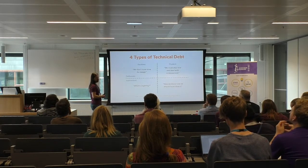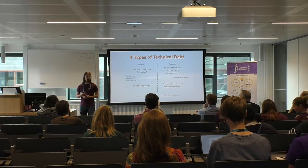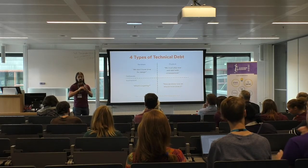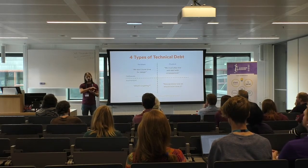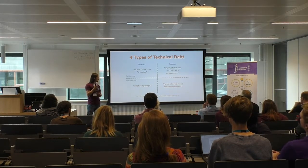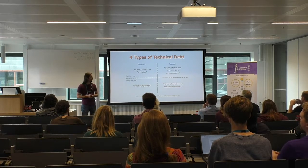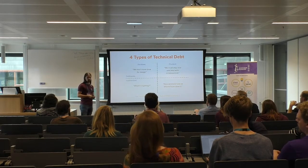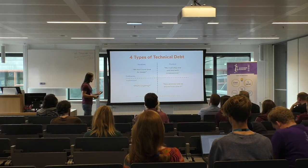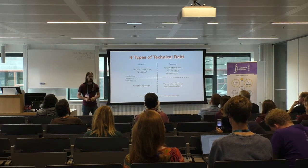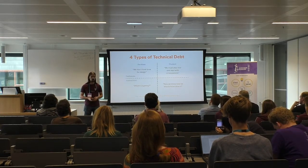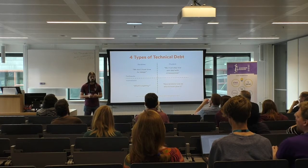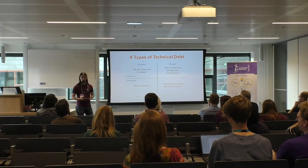There are four types of technical debt that Martin Fowler identified. You can divide them into two axes: reckless versus prudent debt, and deliberate versus inadvertent debt. Reckless, deliberate debt means you don't care about anything at all — you just take the quickest route to have something workable, usually called a hack, without caring about any of the consequences.